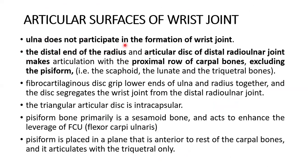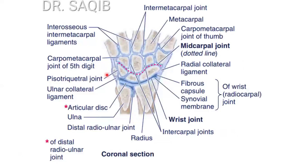The ulna doesn't participate in the formation of the wrist joint. The distal end of the radius and the articular disc of the distal radioulnar joint make articulation with the proximal row of the carpal bones, excluding the pisiform. The bones that participate in the radiocarpal joint are the scaphoid, lunate, and triquetral. The fibrocartilaginous disc grips the lower ends of the ulna and radius together, and the disc segregates the wrist joint from the distal radioulnar joint. The triangular articular disc is intracapsular. The pisiform bone is primarily a sesamoid bone and acts to enhance the leverage of flexor carpi, and it articulates with the triquetral only.